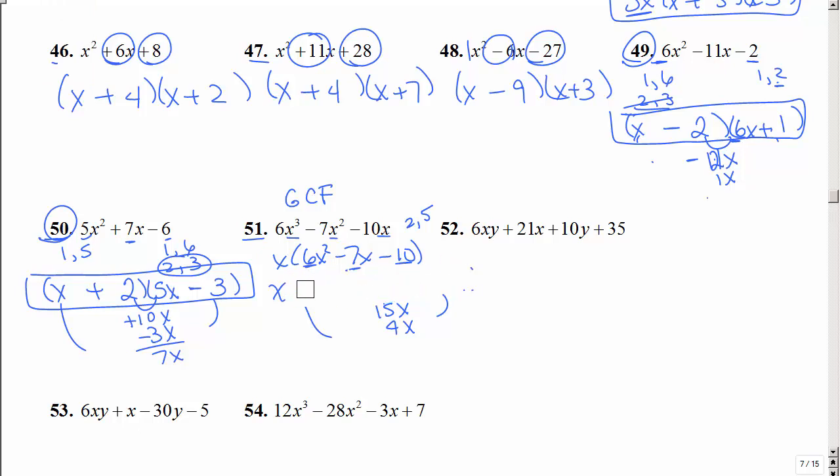Okay, so 2 and 3 doesn't work. How about 6 and 1 with the 2 and 5? Again, I can't put the 2 at the 6. So I'll try that. That's 5x. That's 12x. If I make that negative and that positive, that works. Were those my only choices? No, but I got one that worked.